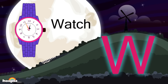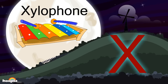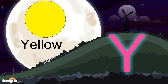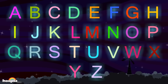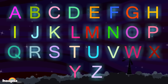W for watch, X for xylophone, Y for yellow, Z for zebra. This is the alphabet song, now it's your turn to sing along.